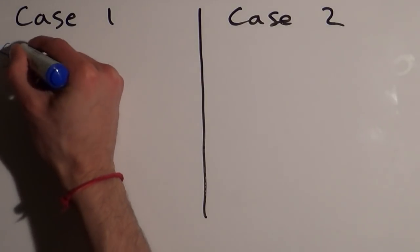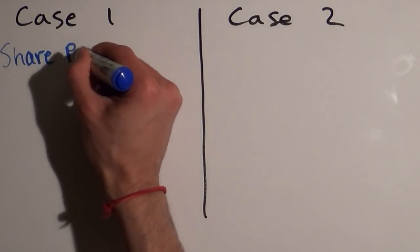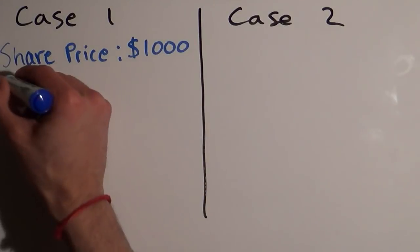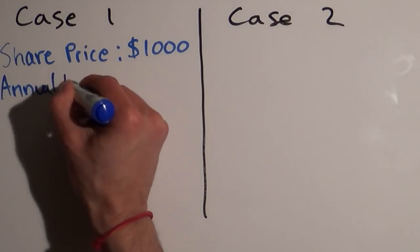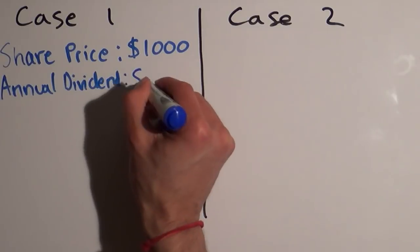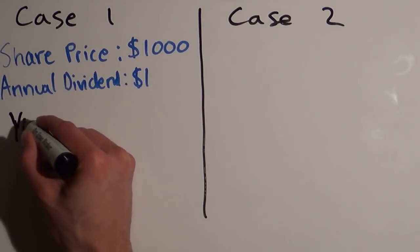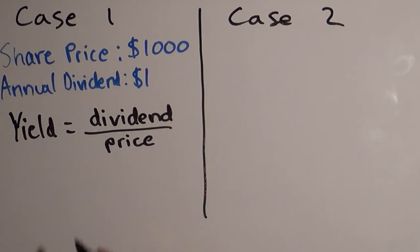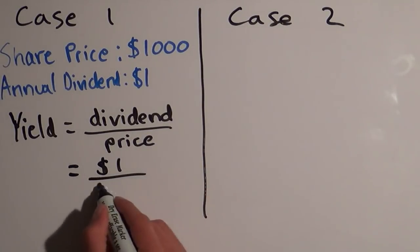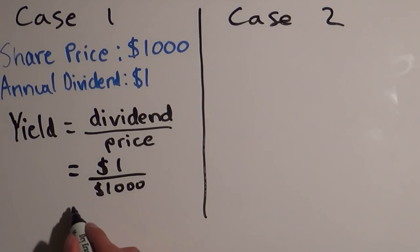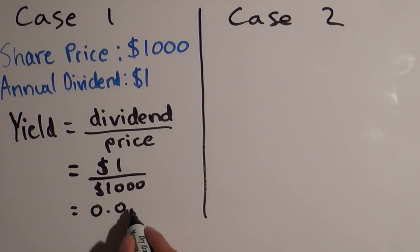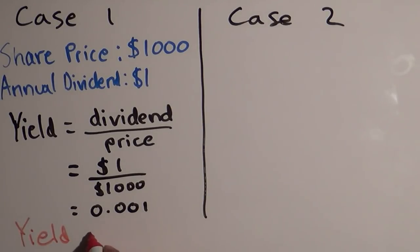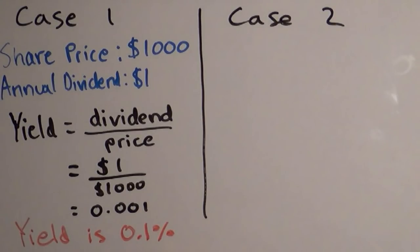Let's start with the thousand dollar share. If one share of Sonishwarma costs one thousand dollars and in one year it gives us one dollar, the annual dividend is one dollar. To calculate the yield we need to take the dividend and divide it by the price. So the dividend of one dollar divided by the price of one thousand dollars equals 0.001, which can also be expressed as zero point one percent. So the dividend yield in this case is zero point one percent.